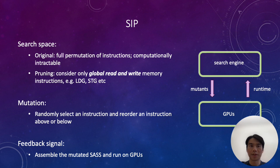These slides present the overall design of SIP. Conceptually, a search engine takes as input a Cubin compiled from a CUDA kernel, and then it generates mutants to the GPU according to its policy, within the search space. The mutant is then measured on the GPU and returns its runtime. If the runtime shows improvement, it is more likely to get accepted, and the search engine proceeds to the next iteration. This runs in a loop until the search budget is exhausted, at which point the optimized Cubin is output.